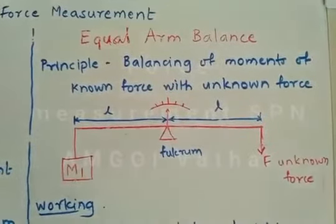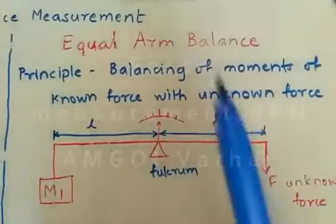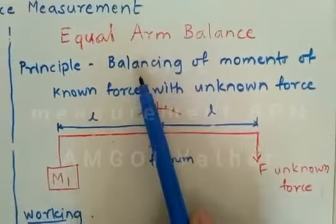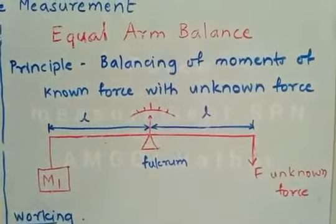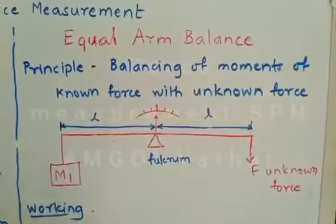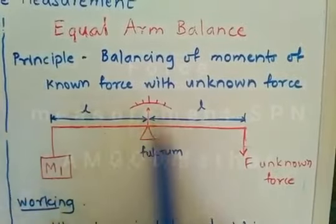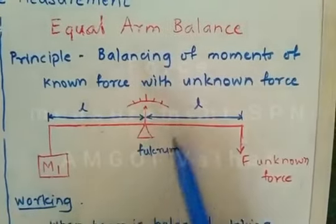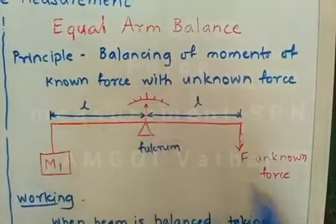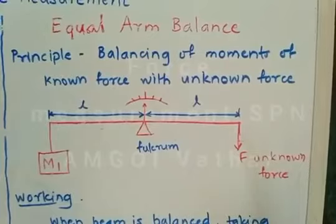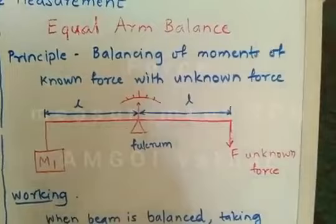Now let us study the equal arm balance. The principle of equal arm balance is balancing of moments of a known force with the unknown force. Basically, equal arm balance consists of a lever which is supported exactly at the center by a fulcrum. At one end of the lever, a known mass M1 is attached,